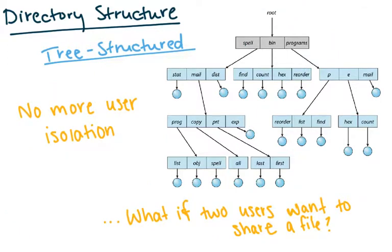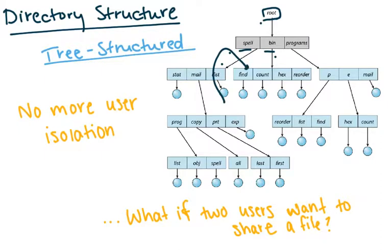A benefit of the tree structure is there's no more user isolation. You can cd dot dot up into the top section and cd into other sections of the computer, so you could hypothetically go into somebody else's subdirectory and work there. If two users want to share a file, you could copy it into somebody else's directory, but that's not really sharing because then technically they're two different copies.